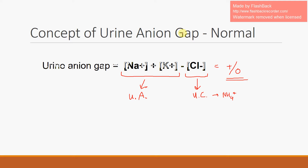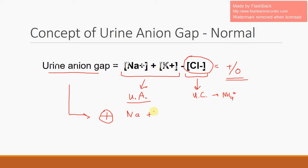The unmeasured anions in the urine are not going to change much. What's really the driving factor for determining whether a urine anion gap is positive or negative is the magnitude of the chloride anion. If the Na plus K in the urine stays constant, but the chloride in the urine is very low, you're going to get a very positive urine anion gap.